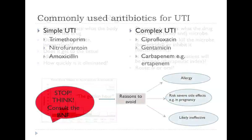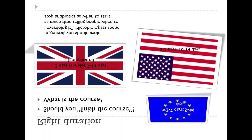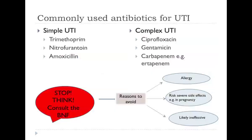Looking at UTI treatment specifically: for simple cystitis, the first-line agents are trimethoprim, nitrofurantoin, and amoxicillin. For complex or upper UTI, we might consider ciprofloxacin as a broader-spectrum agent, or injectable agents like gentamicin, or even carbapenems if multi-drug resistance is a concern. Always check the BNF, as treatment recommendations change from year to year based on resistance patterns.